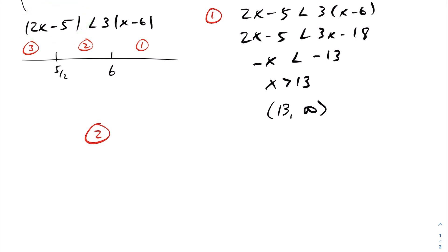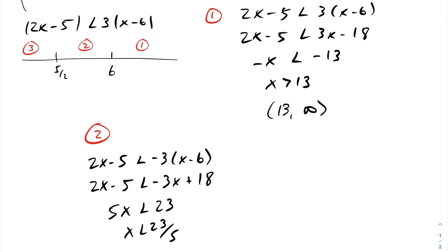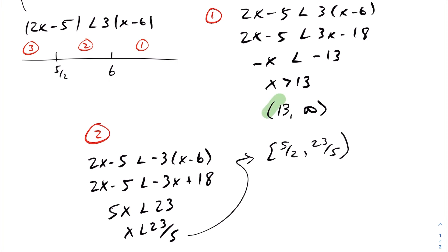For interval two, the left-hand side absolute value is positive and the right-hand side is negative. Solving the resulting inequality, we get x is less than 23 over five. Since 23 over five is within this interval, the solution set for interval two is from five halves to 23 over five. Our answer set so far: greater than 13, and between five halves and 23 over five.